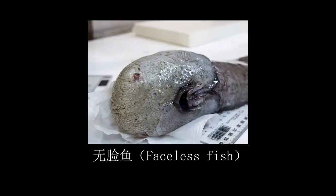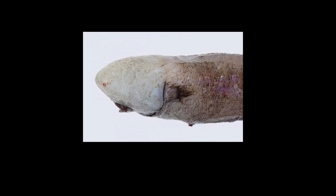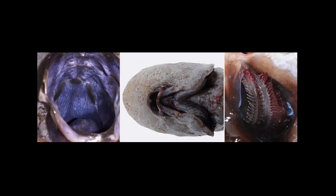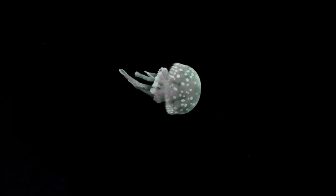In the pitch black darkness of the deep sea, many marine creatures have evolved with degraded eyesight. The faceless fish is a typical example — it is not actually without a face, but lacks eyes and its head is fused with its body, giving the appearance of being faceless. This fish inhabits depths of 4,000 meters, relying on consuming plankton for sustenance.